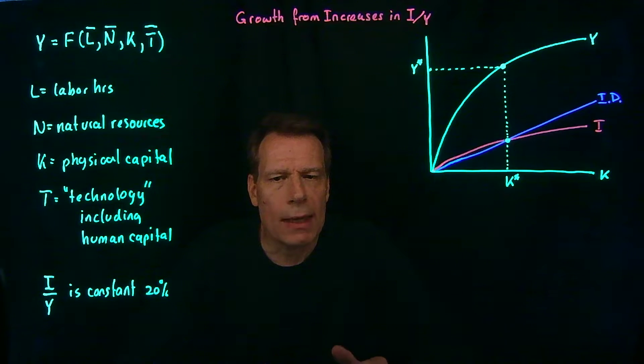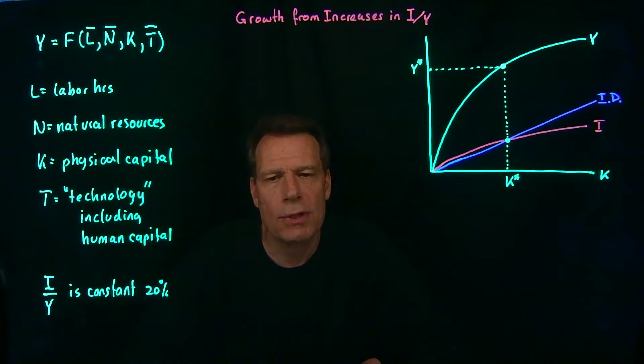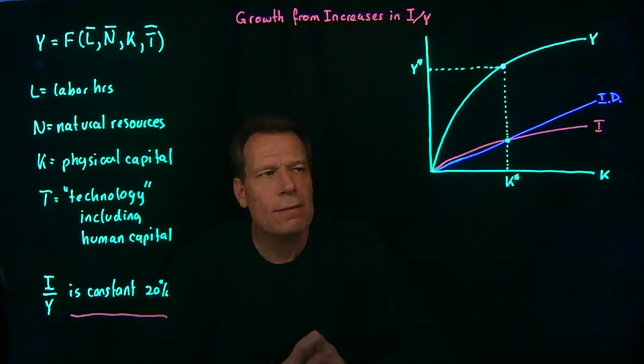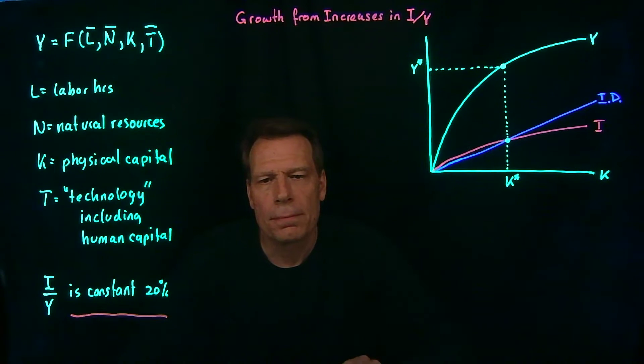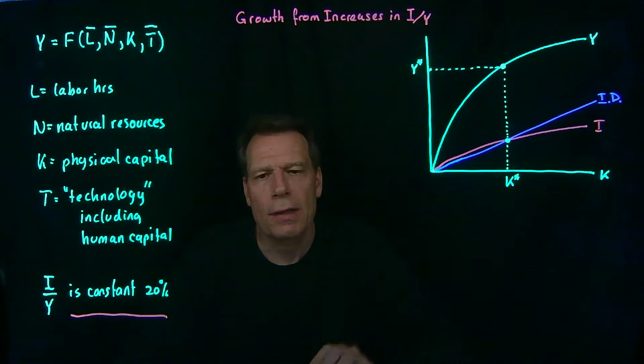One of the assumptions we've made is that the investment share of GDP is constant at 20%. That assumption allowed us to draw the investment curve in our picture. If investment is always 20% of GDP, we can look at GDP and just take 20% of that and draw our investment curve.